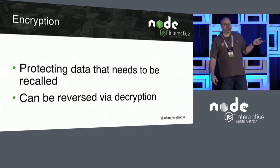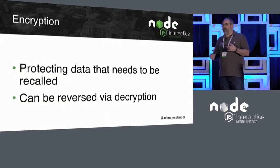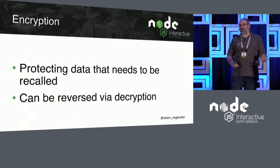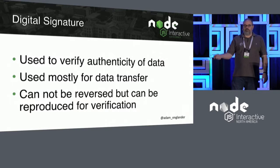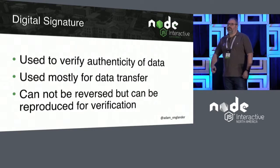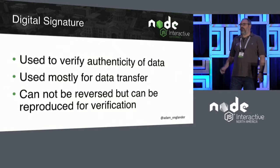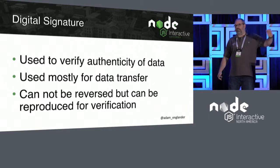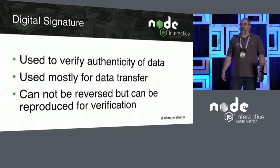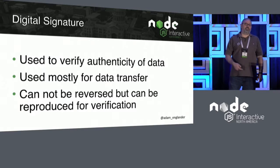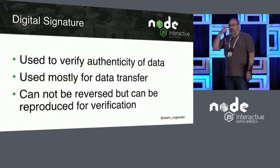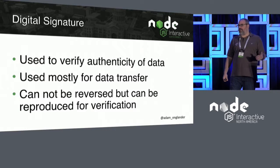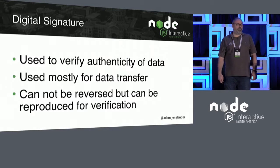Encryption is protecting data that needs to be recalled, because it can be reversed via decryption. Key derivation and digital signatures cannot be reversed — they can just be recreated. Digital signatures are used to verify the authenticity of data. Sometimes a digital signature is not more than a hash, although those aren't terribly secure. If you've done a download before, you've seen the SHA hash and the MD5 hash. That's to verify the data is accurate, although if they've hacked that, they probably hacked the hash too. In this particular situation, it's signing data using secrets so that you can determine authenticity, and it's used mostly in data transfer — when you receive data from someone, you want to make sure it hasn't been tampered with through a man-in-the-middle attack.